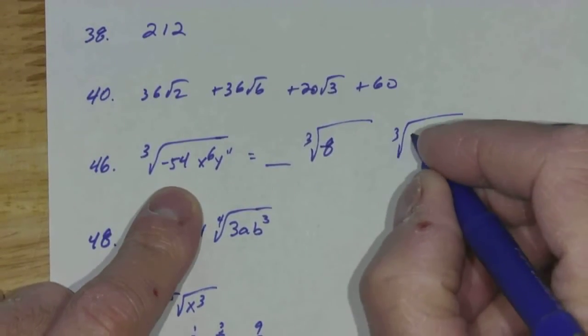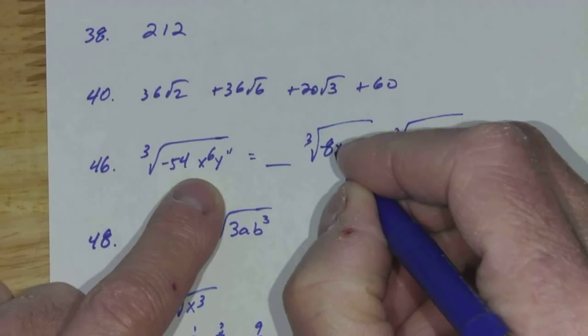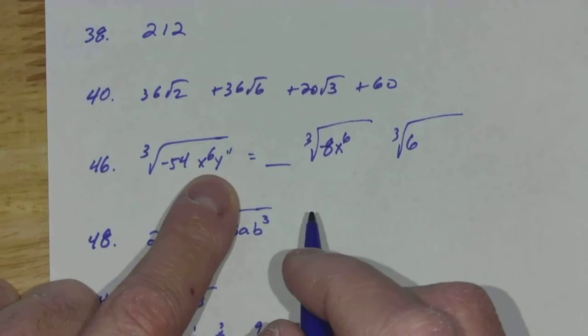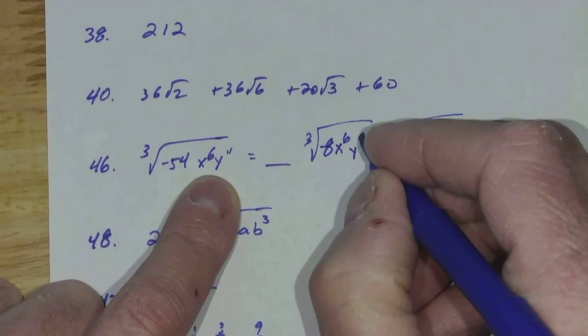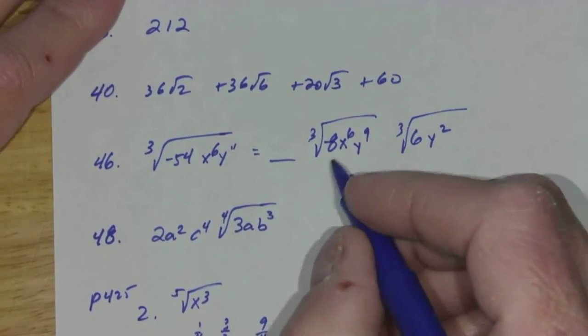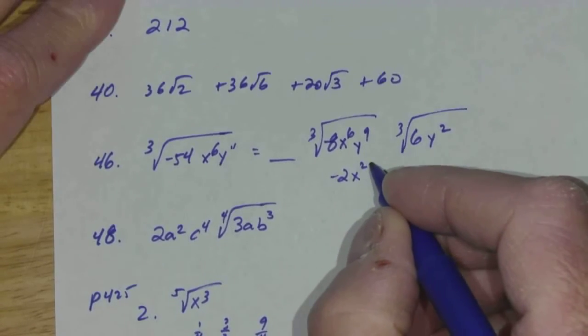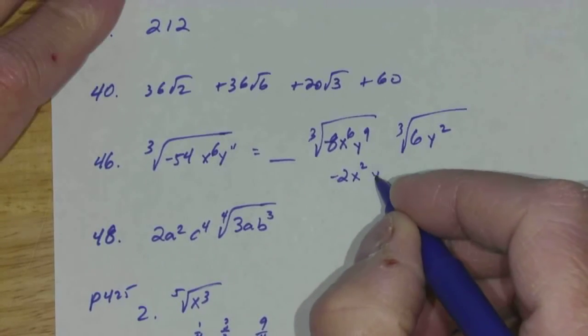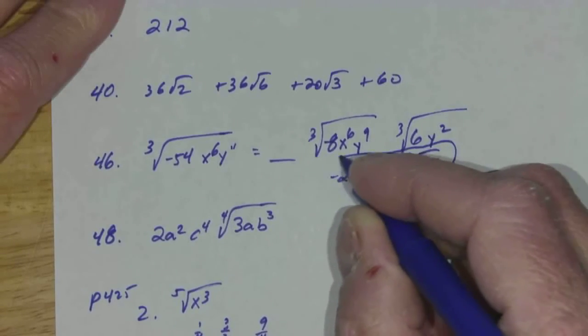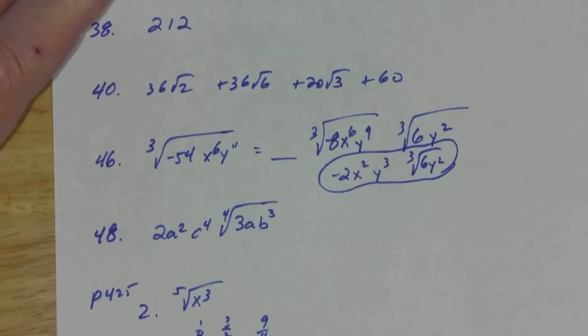And so negative 8 and 6, x to the 6th. I know the square root of that because 6 divided by 3 is 2. y to the 11th. I know y to the 9th. And I have left over y squared. So I got negative 2, x squared, y to the 3rd. And the cube root of 6y squared.